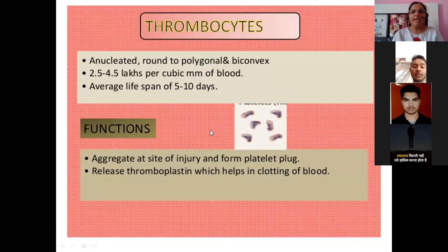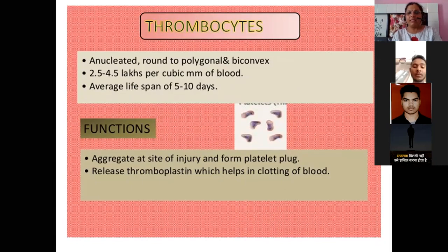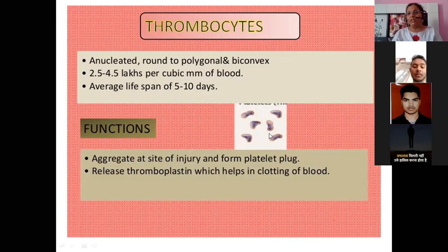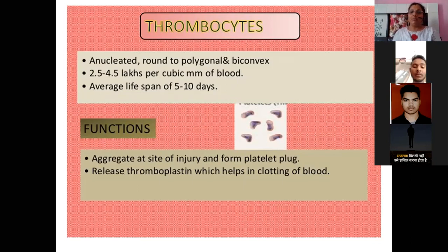Thrombocytes — also called platelets — are anucleated, round to polygonal, and bi-convex in shape. Platelets are responsible for clotting purposes. When we bleed, platelets help the blood to clot and stop the bleeding. If platelet count is reduced, the blood cannot clot properly.